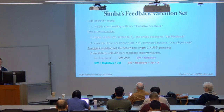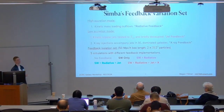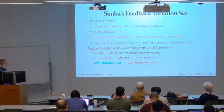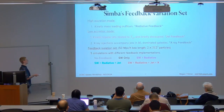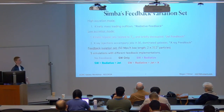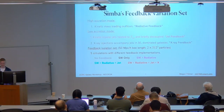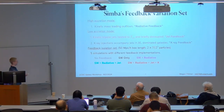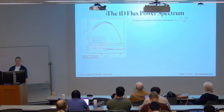Another reason I chose SIMBA is that it has a nice suite of simulations that isolate different feedback modes. There are five simulations: one with no feedback, one with only stellar feedback, one adding radiative feedback, one adding jet feedback, and so on. This allows me to isolate exactly which part of the AGN feedback model is causing the changes we see in the Lyman alpha forest.